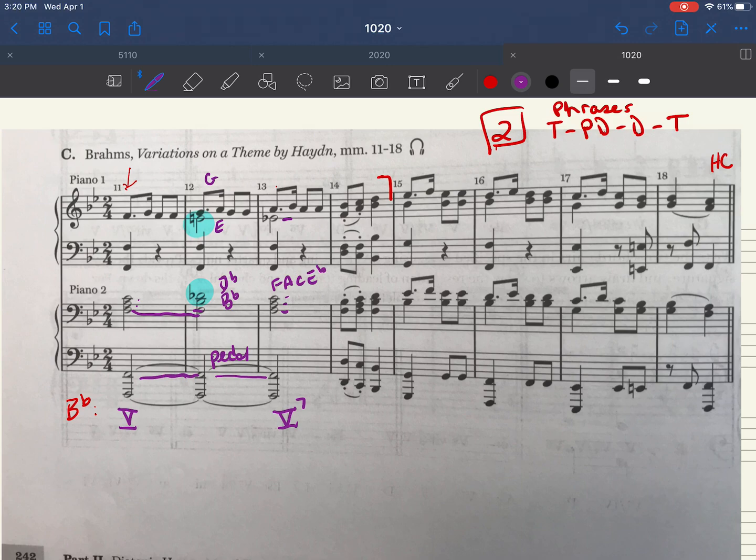The root of this chord, E, G, B flat, D flat is the E natural. And if I could relate it to the next chord, the E natural is the leading tone of five. So E natural is leading to my F, the V7.